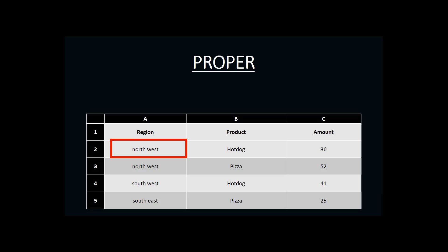To create the PROPER function in Excel, you would begin, like all functions, with the equal sign, followed by the name of the function, and then our information in parentheses. In this case, there's only one piece of information that we need to complete the PROPER function, and that is the cell where our text is located. In this case, we are going to be taking the text 'Northwest' from cell A2, so A2 is our cell reference.